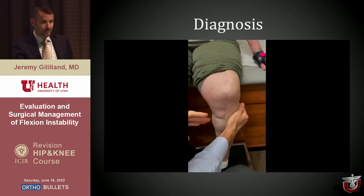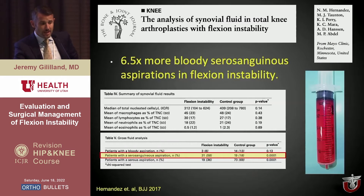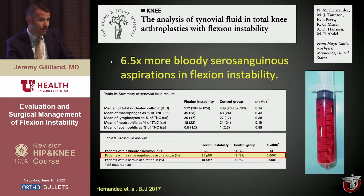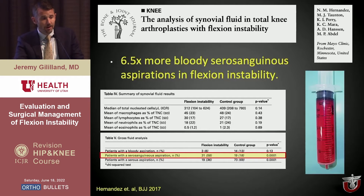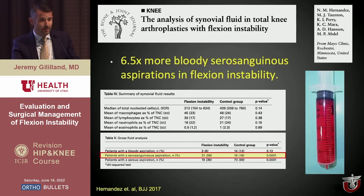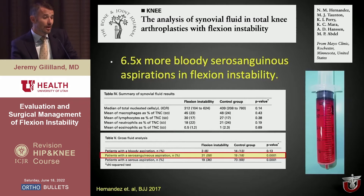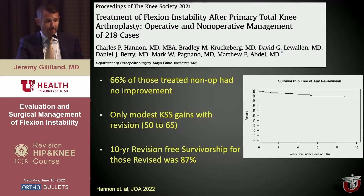The A-to-P shuck measures greater than a centimeter. I'd also encourage you, if you have a revision clinic and are seeing patients for knee pain, to aspirate all these knees — get ESR, CRP, and aspirate them all. It gives you good data about infection and about what else could be going on. Out of the Mayo Clinic, they found six-and-a-half times more bloody serosanguineous aspirations in flexion instability cases.